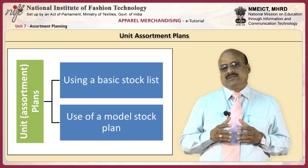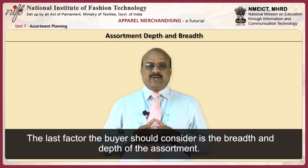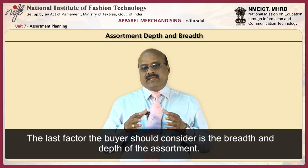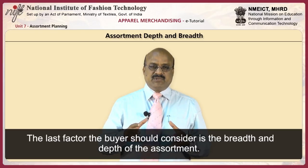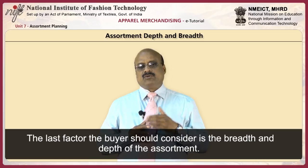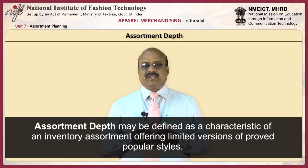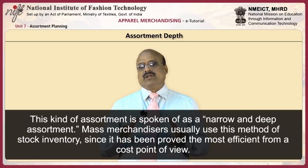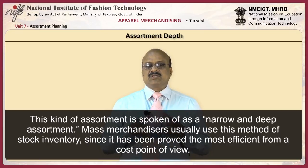When determining assortment plans, consideration must also be given to the quantity of units to purchase. The last factor the buyer should consider is the breadth and depth of the assortment. Working with the money available in the inventory budget, the buyer must make a decision about the breadth of the assortment with respect to its depth and vice versa. Assortment depth may be defined as a characteristic of an inventory assortment offering limited versions of proved popular styles — spoken of as a narrow and deep assortment. Mass merchandisers usually use this method as it has proved most efficient from a cost point of view.